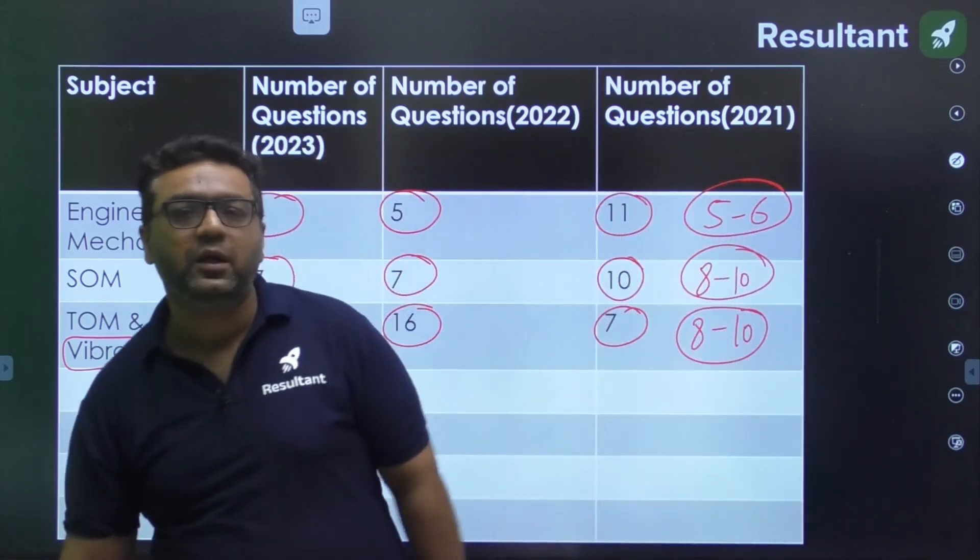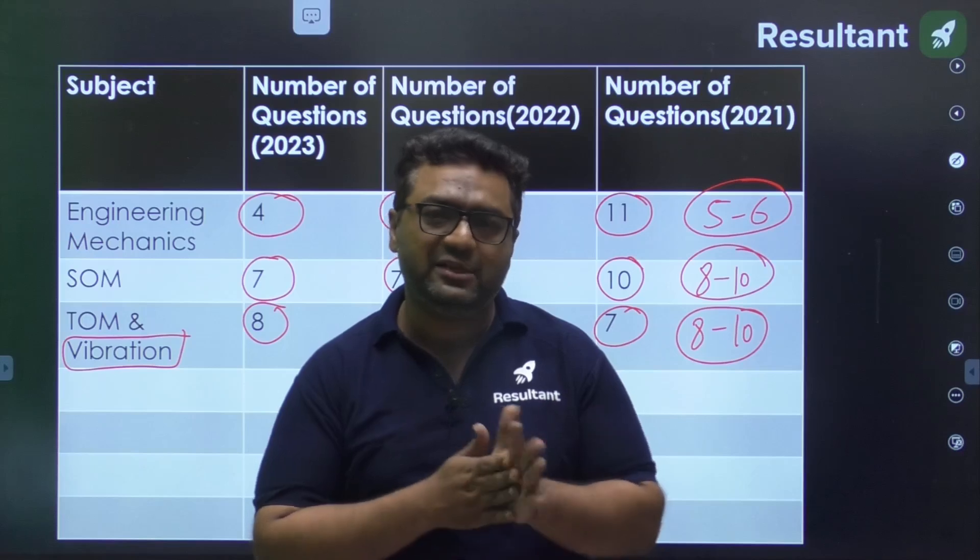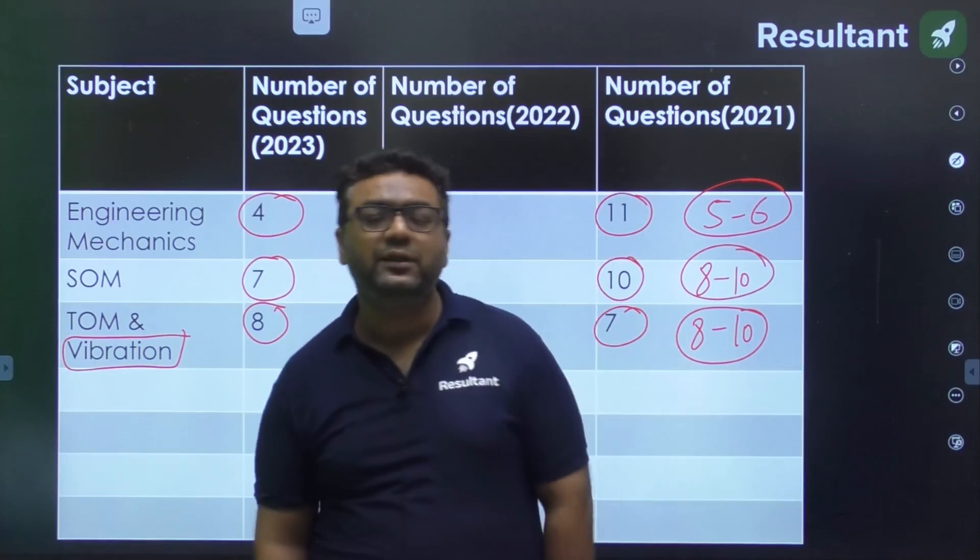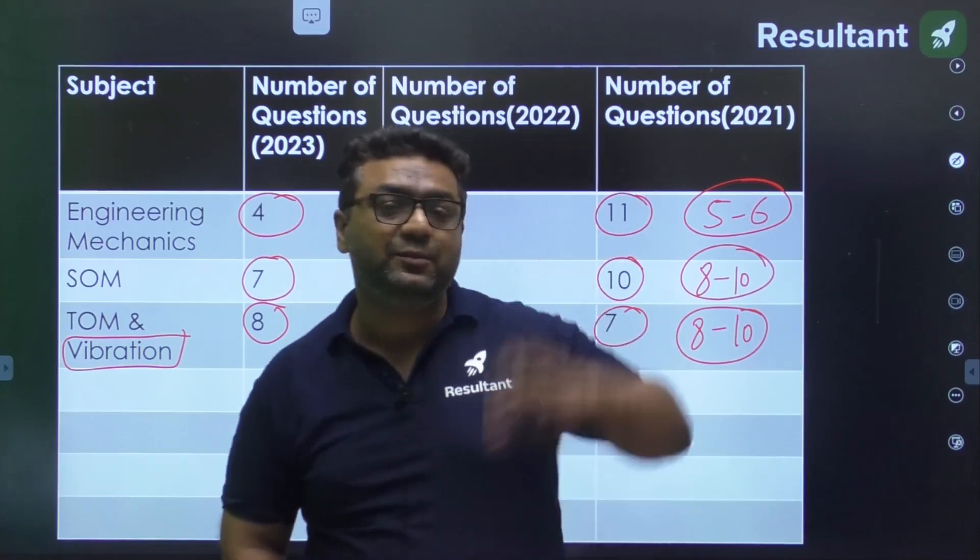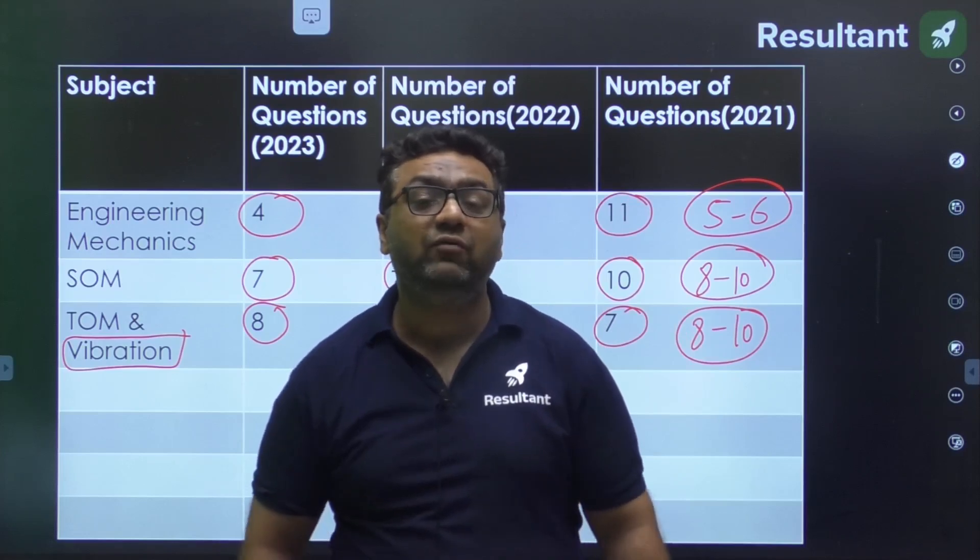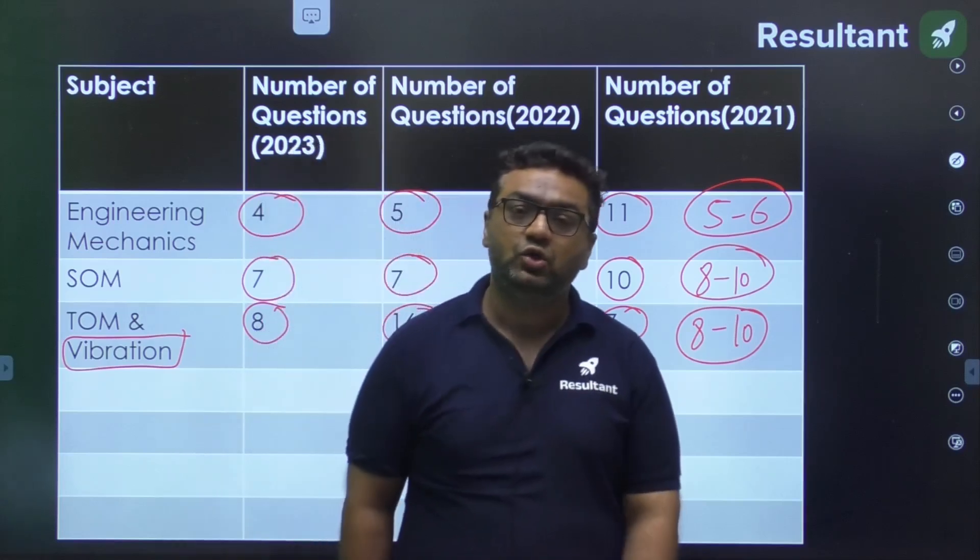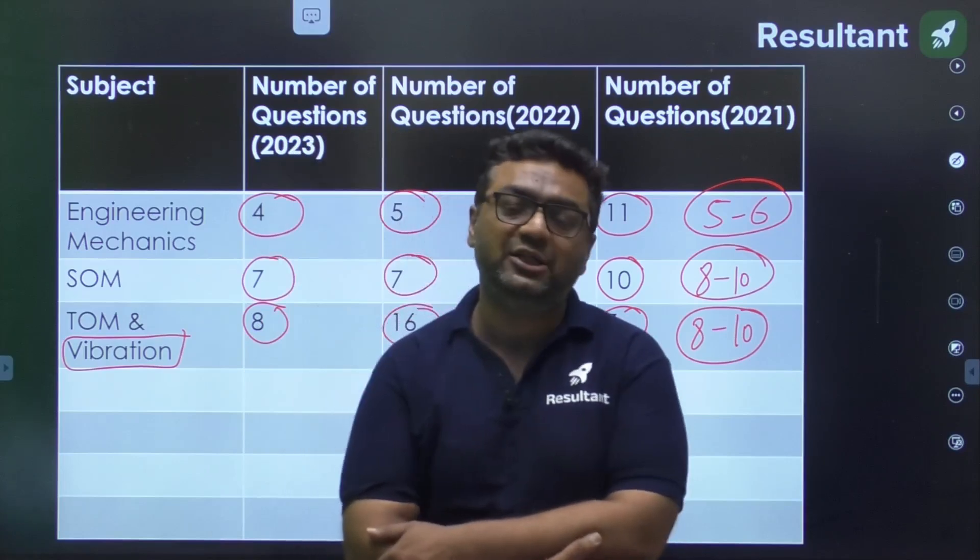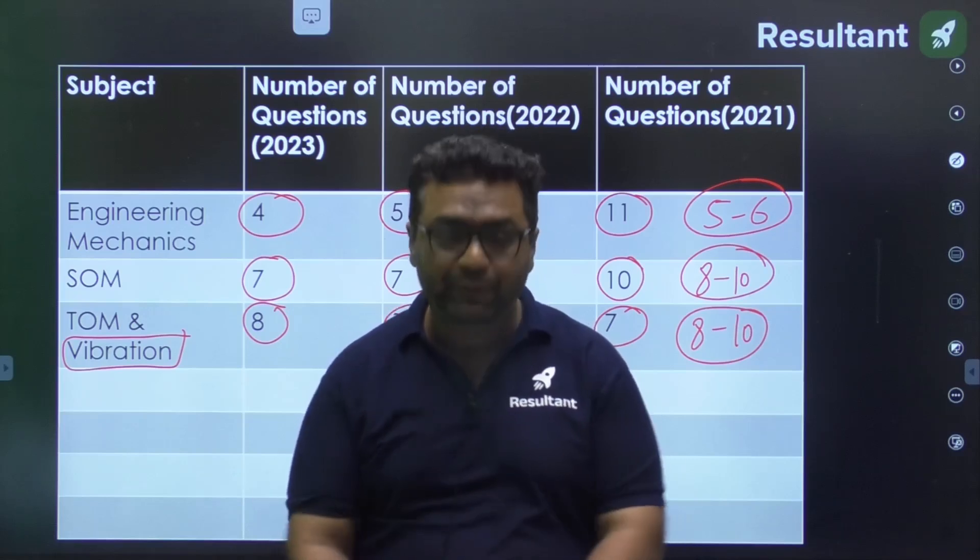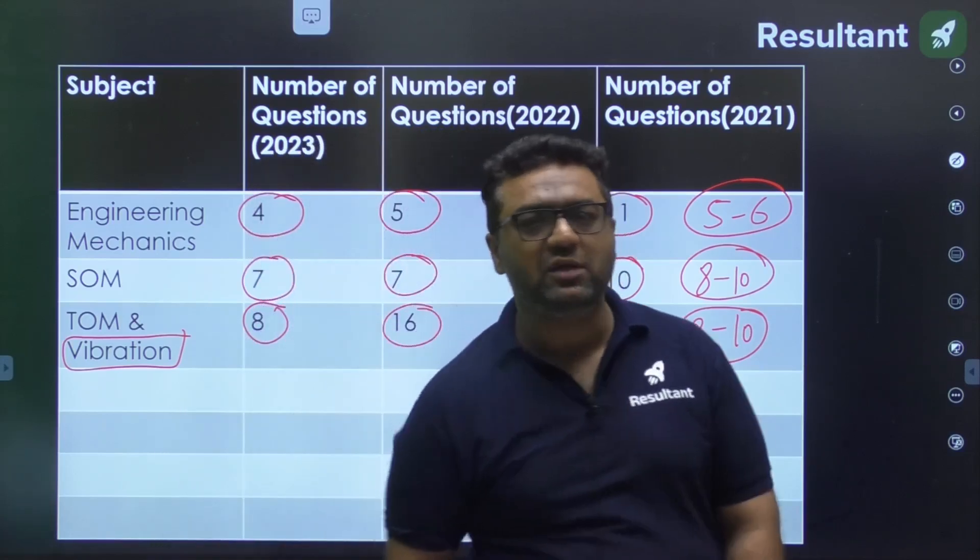If you don't have the HPCL syllabus or previous year paper, download Resultant Mechanical app. There you'll get free study material, a specific folder of HPCL with last year's syllabus and previous year papers. A lot of content is provided there. Within next week you'll see some bigger announcement related to HPCL preparation. We're going to help you with YouTube sessions and some courses as well so you can get proper benefit and selection in these two-three months.